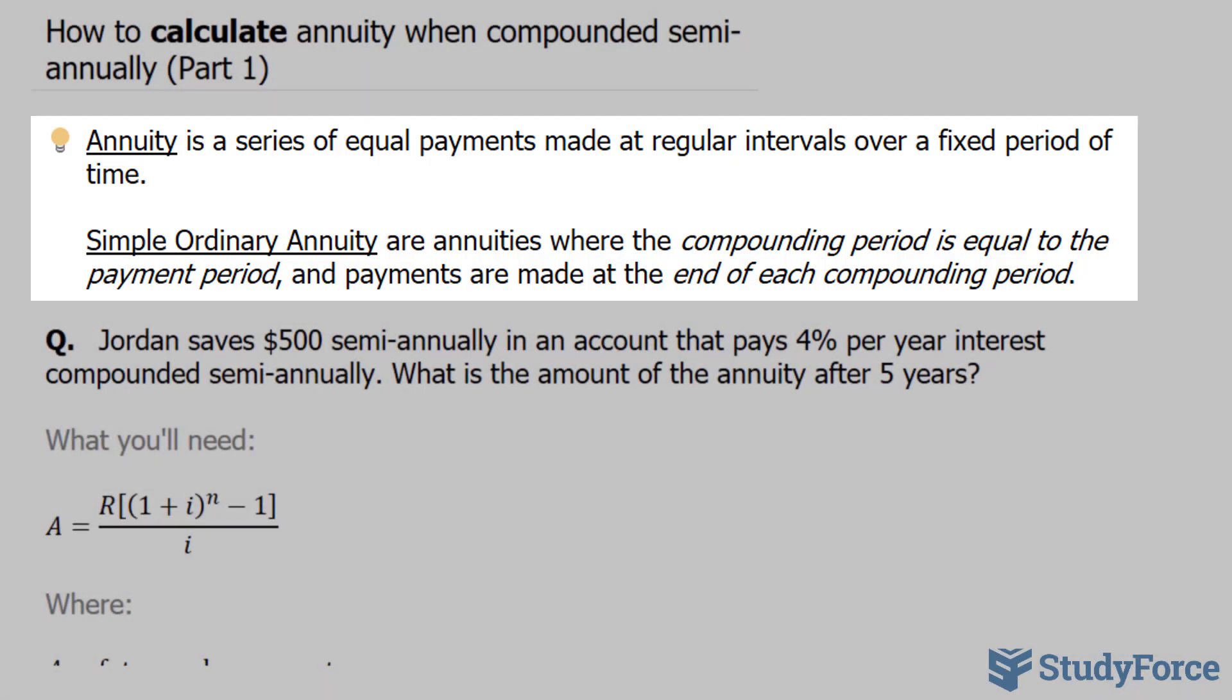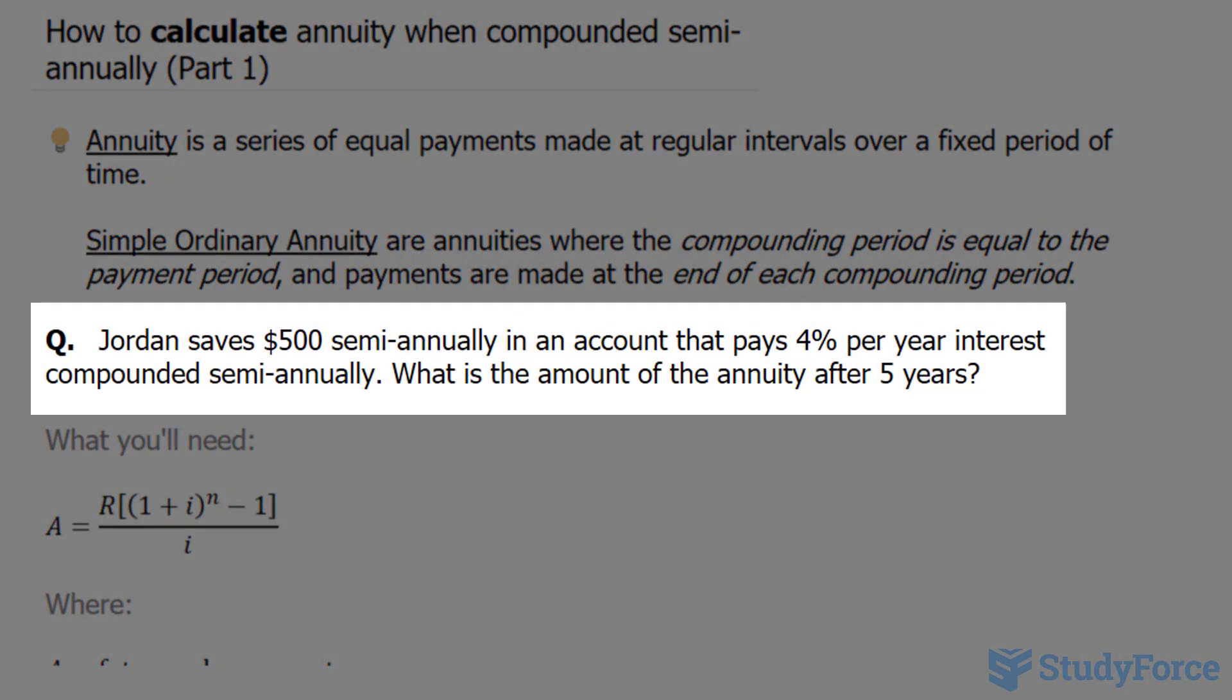The question reads, Jordan saves $500 semi-annually in an account that pays 4% per year interest compounded semi-annually. What is the amount of the annuity after 5 years?